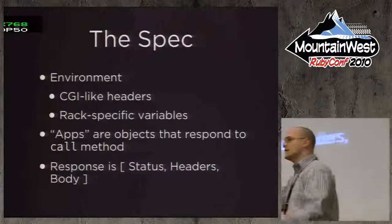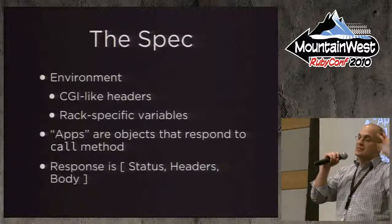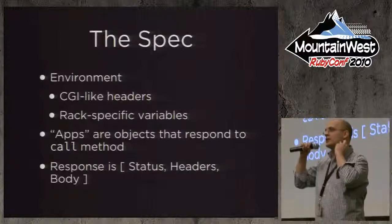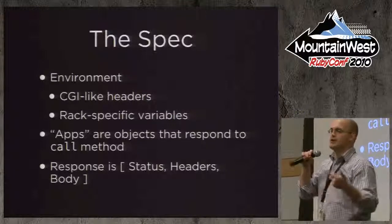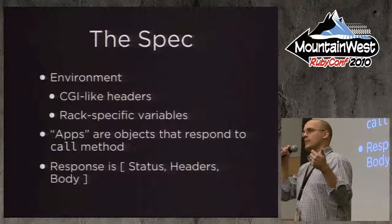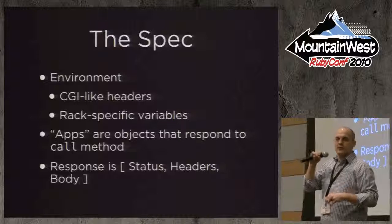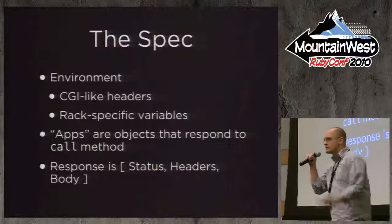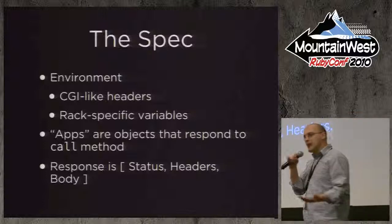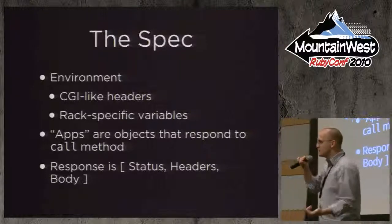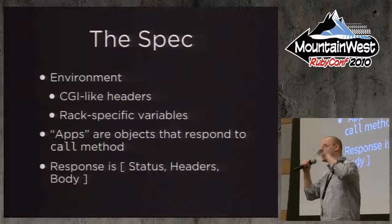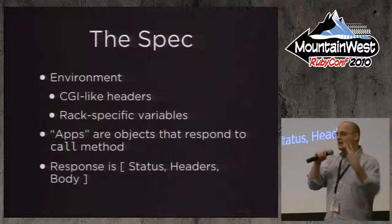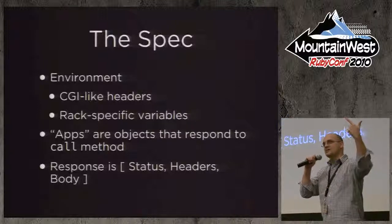Let's talk about what the spec is. The spec in a nutshell specifies three things. You've got an environment — it's a hash with keys and values. The keys are HTTP CGI-like headers: HTTP host, path info, query string — the types of things you get in a CGI environment, plus a couple of Rack-specific variables. You've got apps — an object that responds to one method, call, and takes one parameter: the aforementioned hash. What does it return? An array with three elements: status, headers, body.